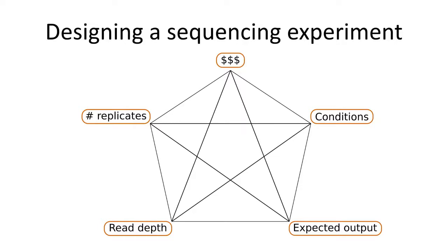There are factors involved that are similar to designing other types of experiments, like number of replicates, money, number of conditions, and what you expect to get out of your experiment. But something unique to sequencing experiments is read depth. Read depth is integral to how you design a sequencing experiment and it interconnects with all of these other things. I'll go further into this in a future video, but I want you to think about it as I define read depth and talk about how to create libraries and how sequencing works.